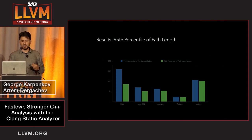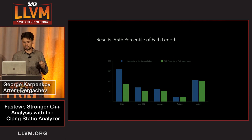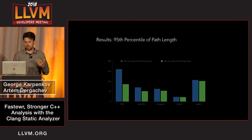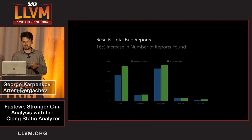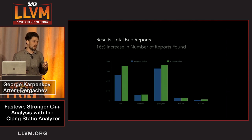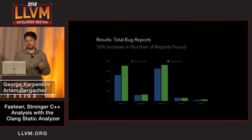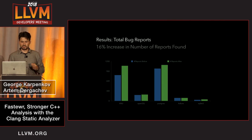The results: a histogram showing the 95th percentile of path lengths shows a huge decrease on XNU in that percentile, which means bug reports are much easier to understand. On many other projects the decrease is not that huge, but it's still quite noticeable. Additionally, we were able to find many more bugs, because the analyzer has a fixed budget of how many nodes it can explore, and by using a coverage-guided iteration order we utilize that budget much more effectively. This leads to a 16% average increase in the number of reports found.